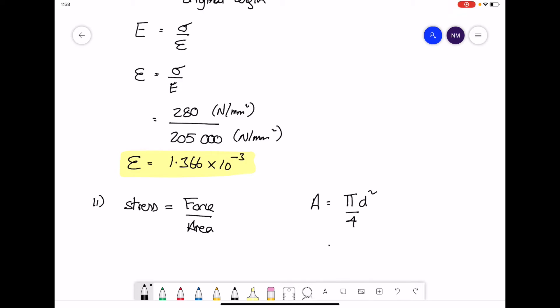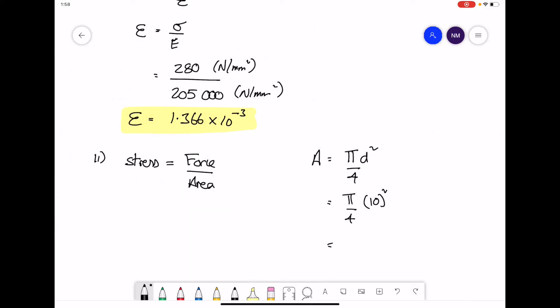By pi d squared over 4, using the diameter. Use your calculator. You can work that out to be 78.54 millimeters squared for the area.